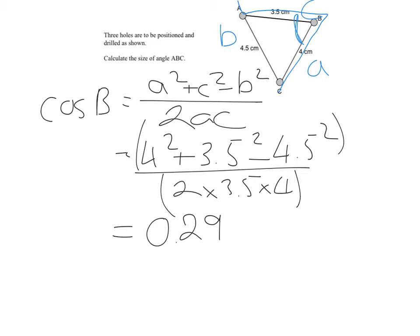Now, just like with the other questions, do not clear your calculator. You want to be as accurate as possible. And B is going to be cos inverse of 0.29, which when I put in the calculator, I get 73.398, so it's really 73.4 degrees.